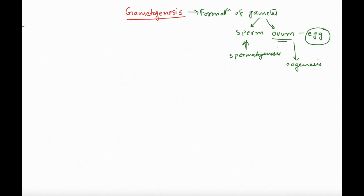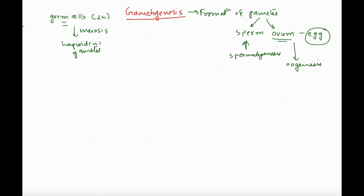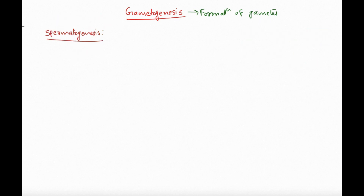From where are these gametes produced? They are produced from germ cells. We have talked about somatic cells and germ cells in a previous video. Germ cells are diploid — they can undergo meiosis to produce haploid gametes. So the gametes will be produced from germ cells. Now let's begin with spermatogenesis.